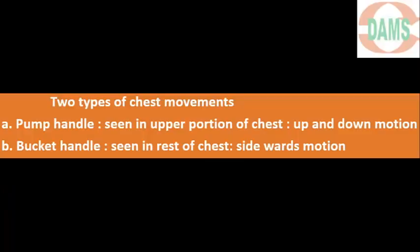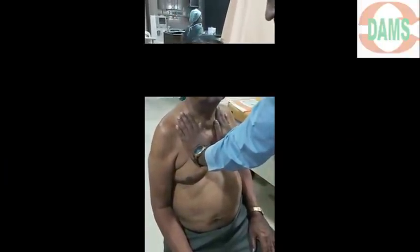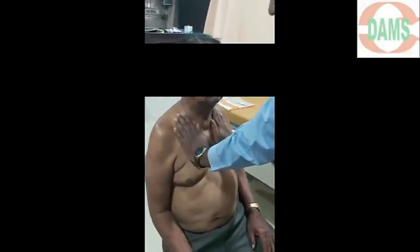For palpation of chest movements, there are two types. In the upper portion, there is a pump handle movement, which is an up and down motion. In the rest of the chest, we notice a bucket handle type movement, which is generally a sideways motion. These movements are due to the internal anatomy of the ribs and intercostal muscles.